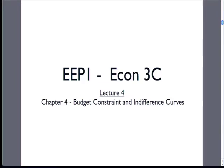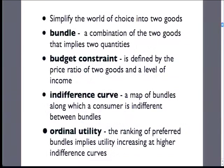Moving forward, we're now in chapter four: budget constraints and indifference curves. We'll simplify the world down into a choice about two goods. Bundles are combinations of those two goods — a quantity of good one and a quantity of good two. The budget constraint defines what bundles we can afford, determined by income and the price ratio of the two goods. Separate from the budget constraint is the indifference curve — a mapping of sets of bundles along which the consumer is indifferent, which looks like a curve when drawn out.